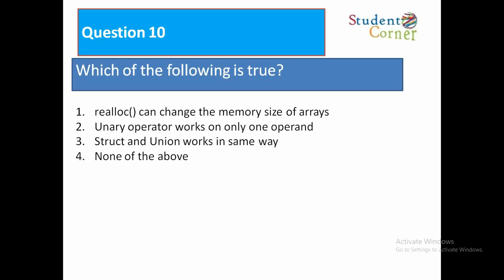So the first option is wrong. Option 3: Structures and unions work in the same way - both procedures are the same, but memory allocation is different for structures and unions. None of the above is not correct. The answer is option 2: unary operator works on only one operand. The meaning of unary operator is performing an operation on only one operand. Examples are increment and decrement operators.